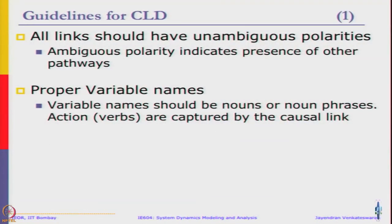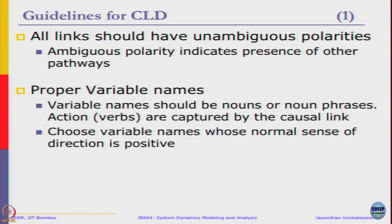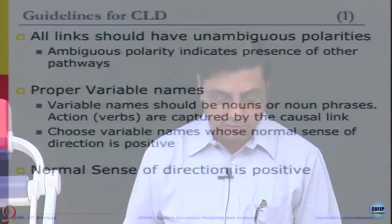The second point is proper variable names. Variable names should preferably be nouns or noun phrases. Actions are captured by the causal links themselves, so you do not need to write actions or verbs as a variable. Choose variable names whose normal sense of direction is positive. You do not need to write 'criticism increases unhappiness' — you can say 'criticism decreases happiness.' So the normal sense is in the positive direction, which makes it easier for us to visualize.